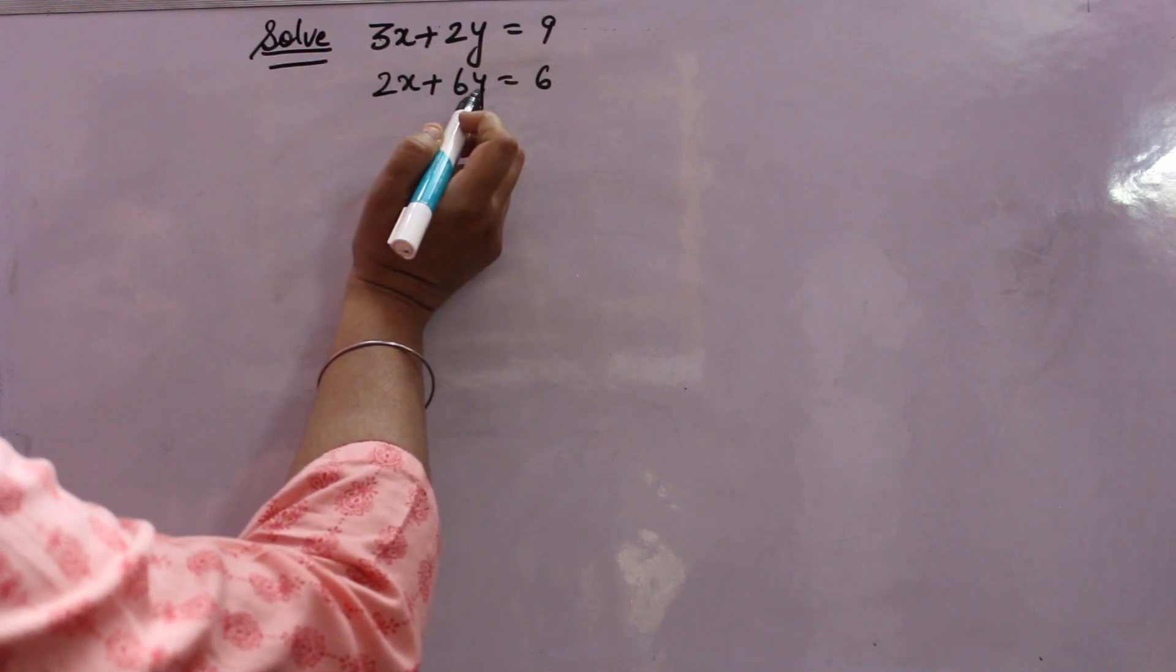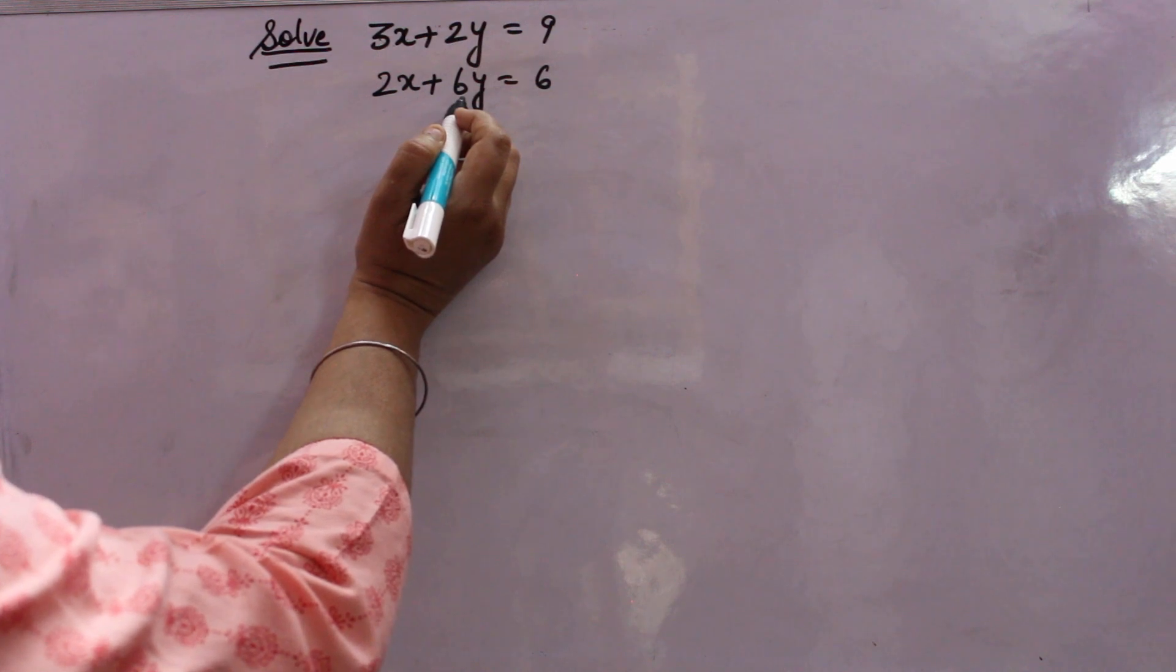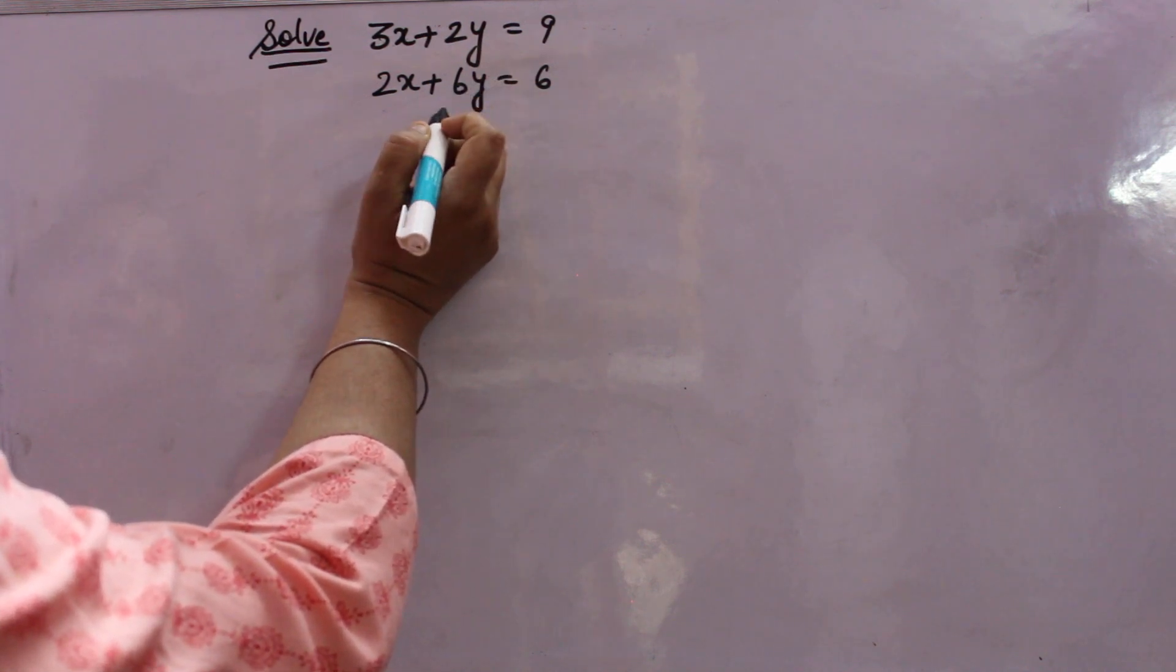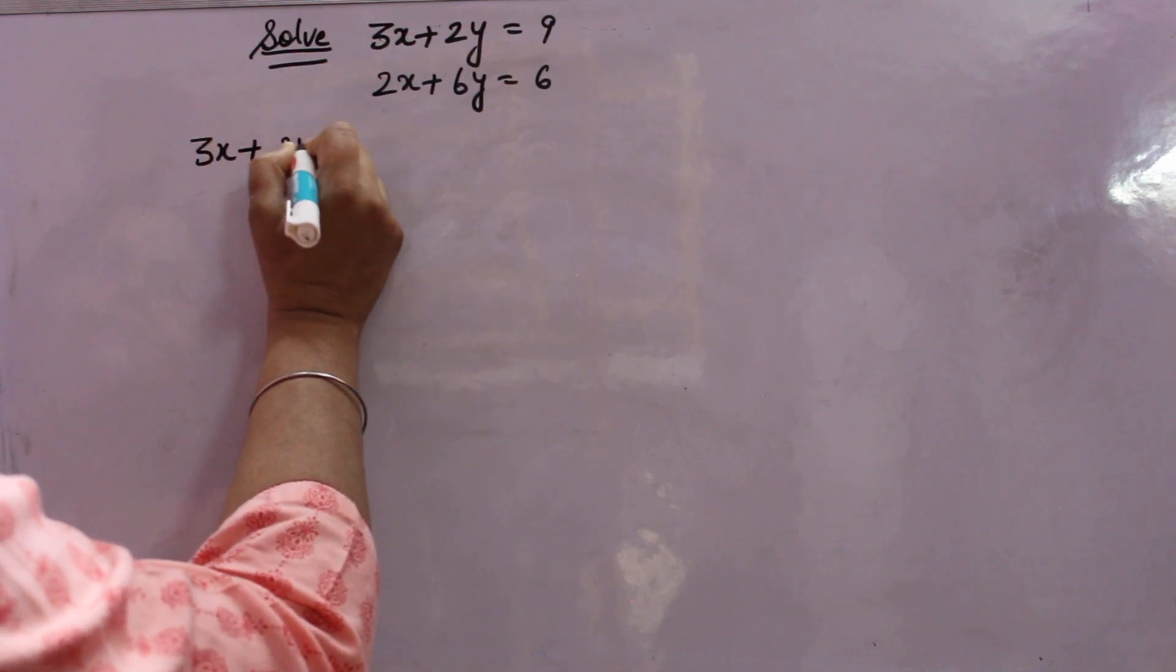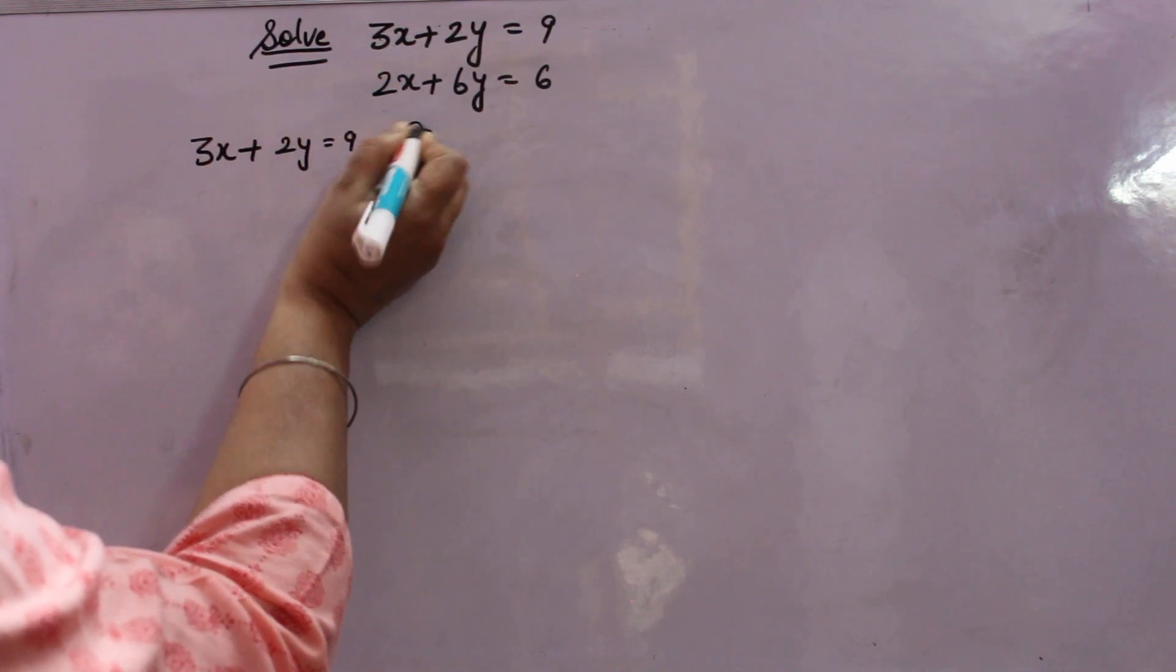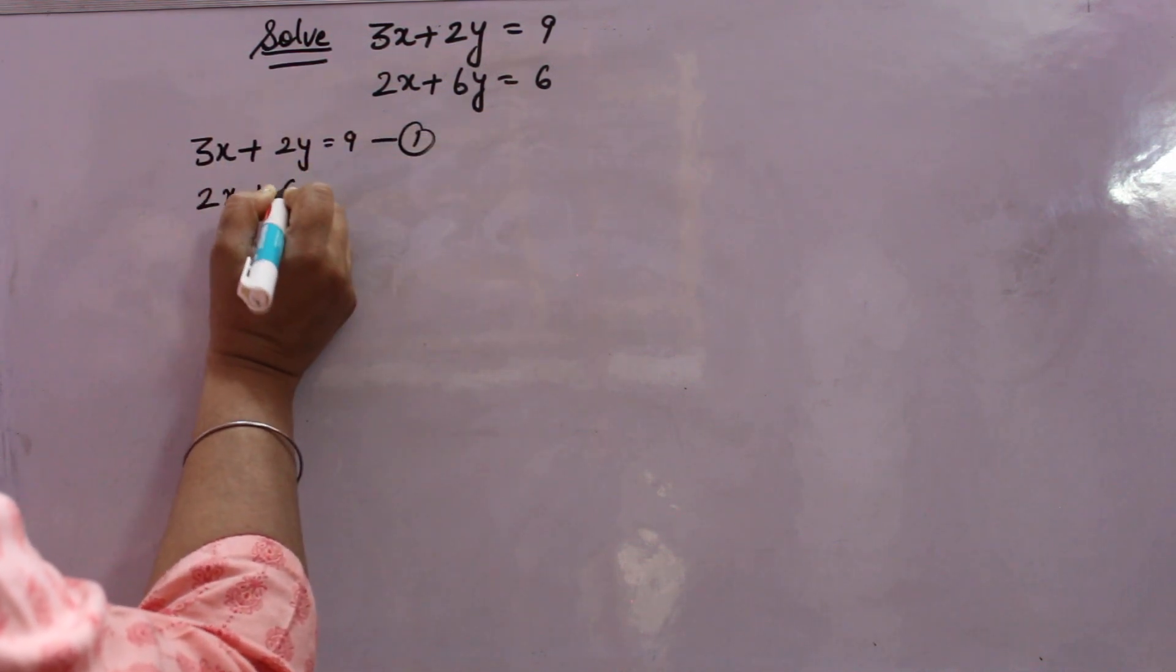Solve these two equations. Firstly, I am solving by elimination method, then by substitution method. In both cases, the answer will come same. First equation is 3x plus 2y is equal to 9. Second equation is 2x plus 6y is equal to 6.